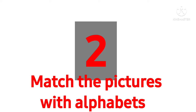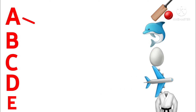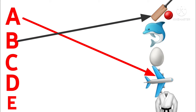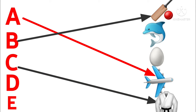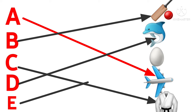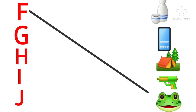Match the pictures with alpha bears. A: Aeroplane. B: Bite. C: Coat. D: Dolphin. E: Egg. F: Frog.